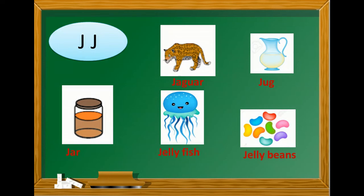J, capital J, small j. J for jaguar. J for jug. J for jar. J for jellyfish. And J for jelly beans.